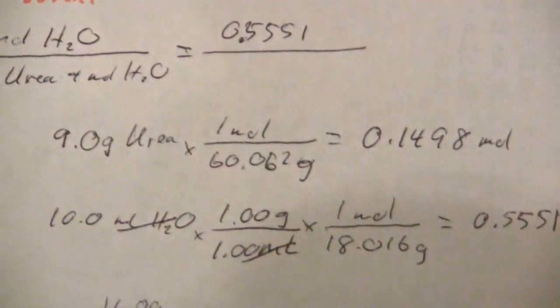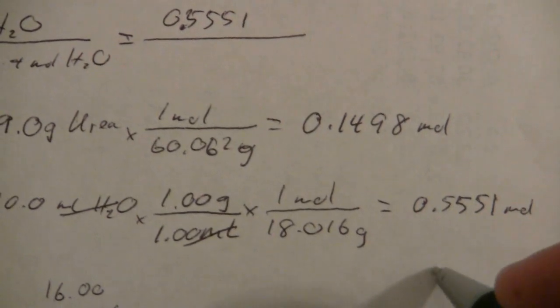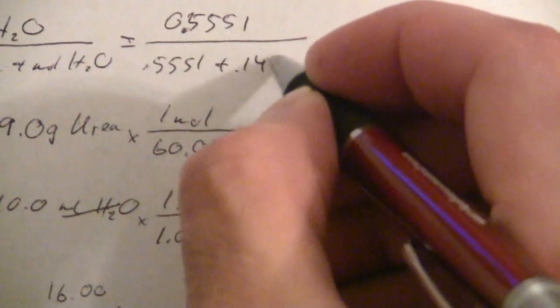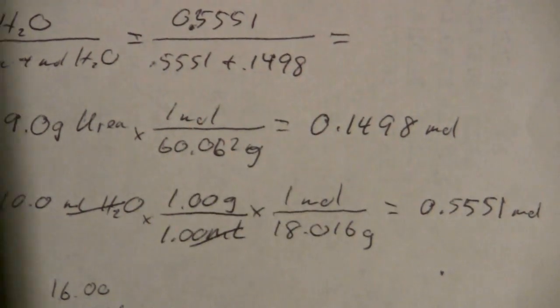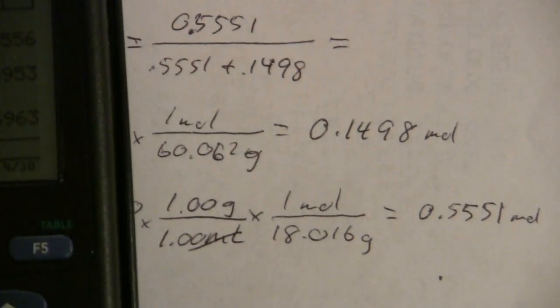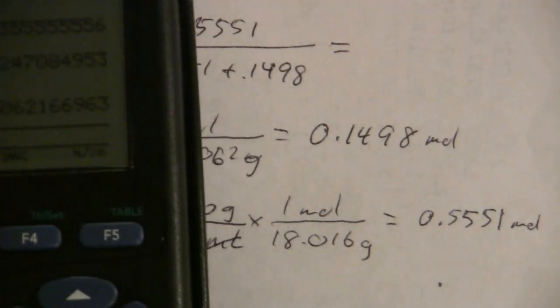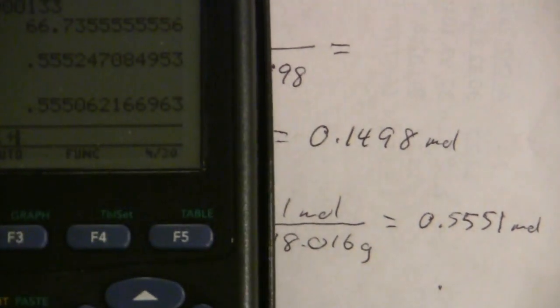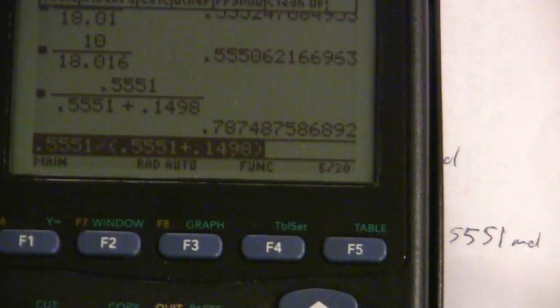We just take 0.5551 divided by the total between those two. So 0.5551 divided by 0.5551 plus 0.1498, and we get 0.7875. So that is my mole fraction here.